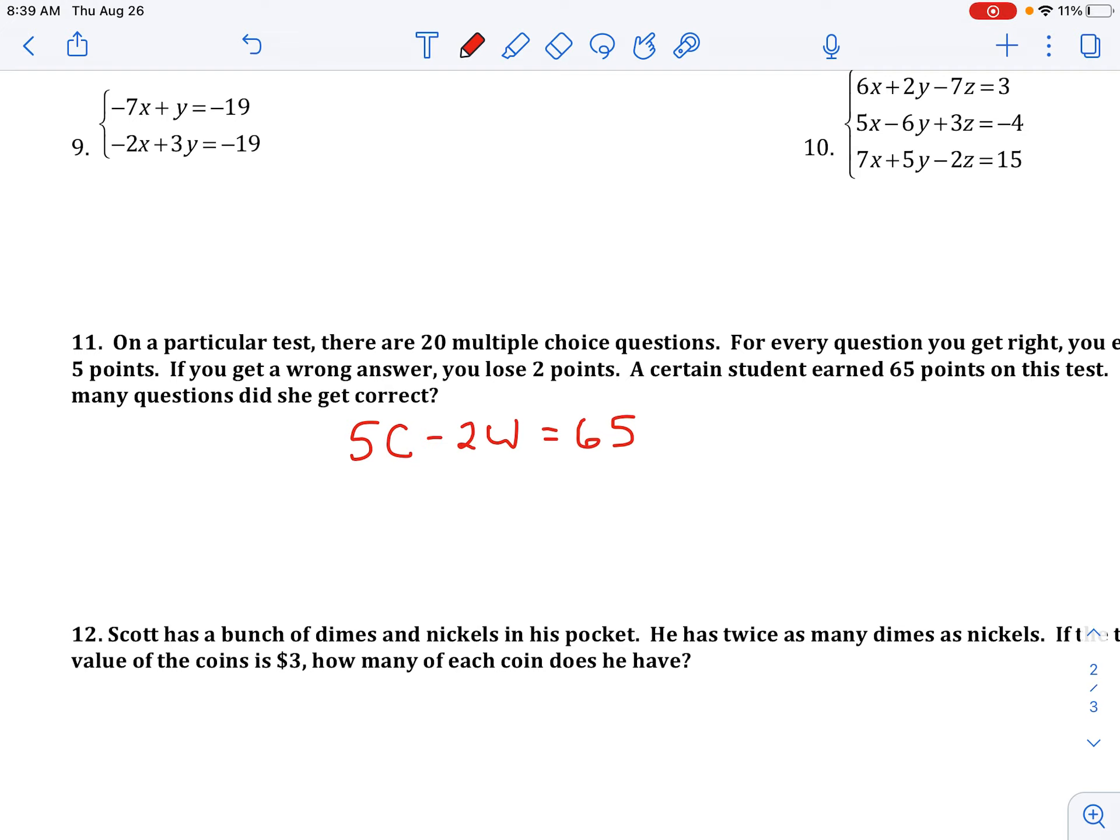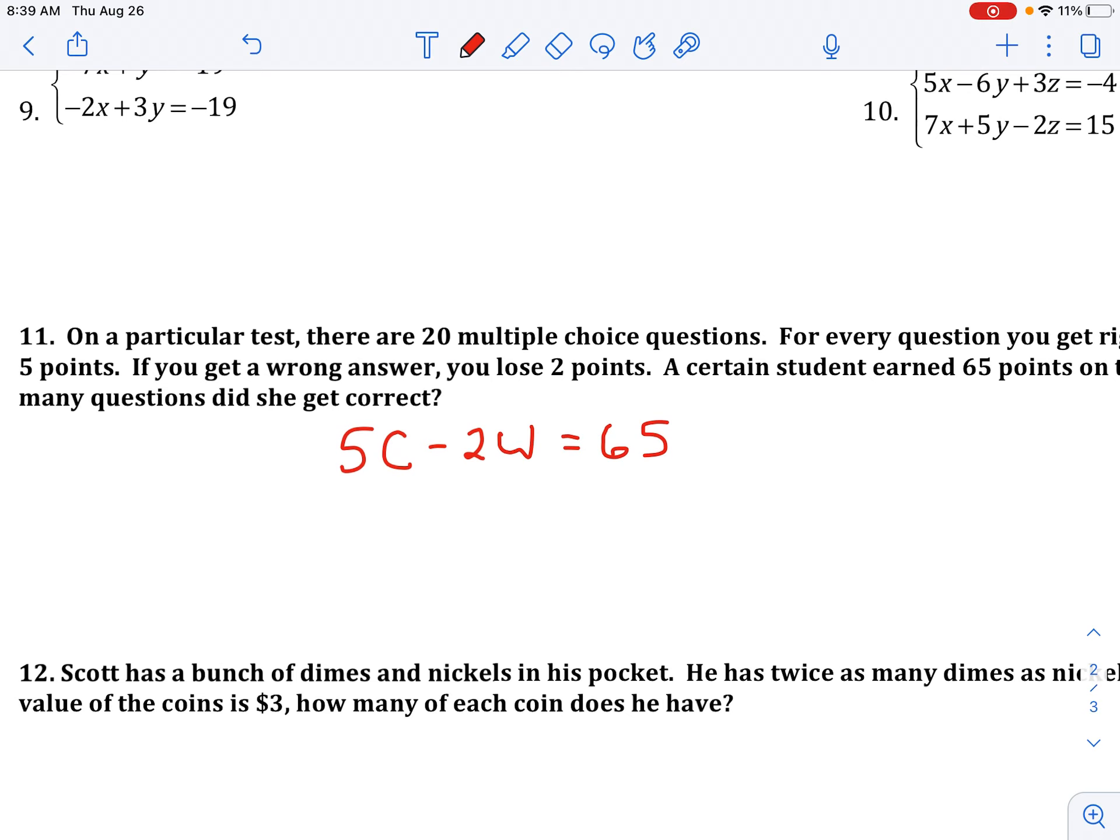Now we have two unknowns, so we need two equations. Well, we also know that there are 20 multiple choice questions, and for every question you either get it correct or wrong, so we know that the number of questions correct plus the number of questions wrong has to equal 20. So now we have two equations and two unknowns.